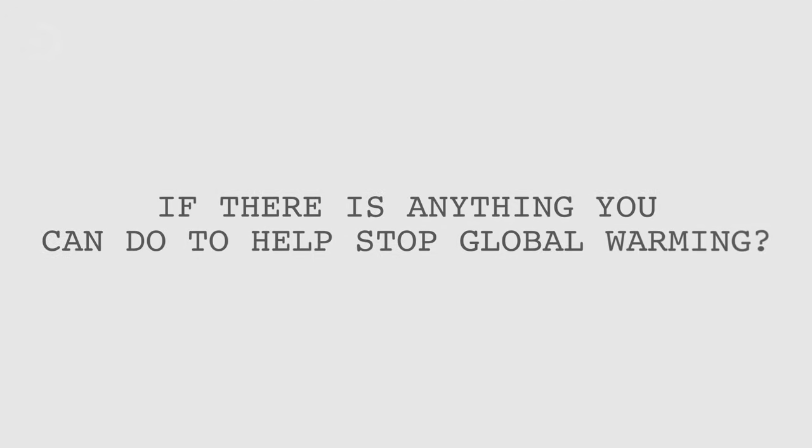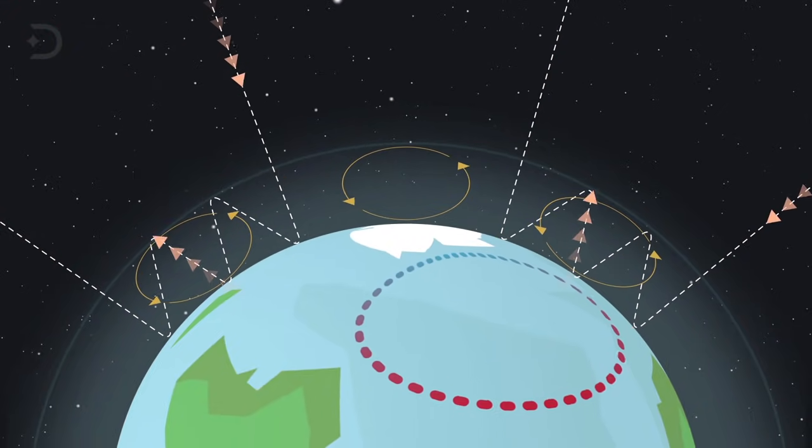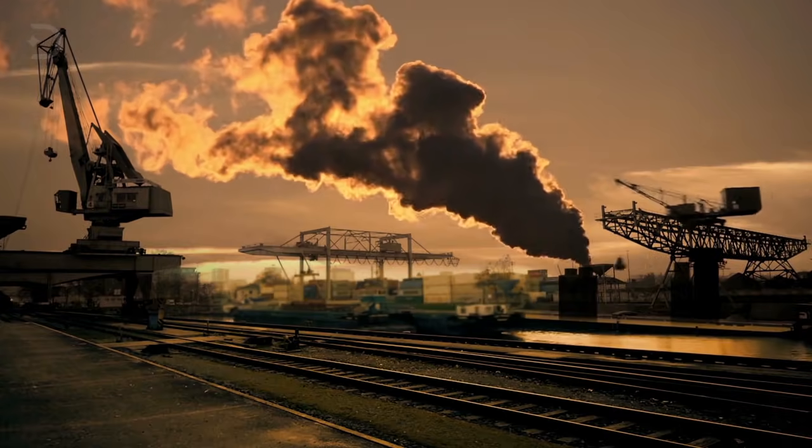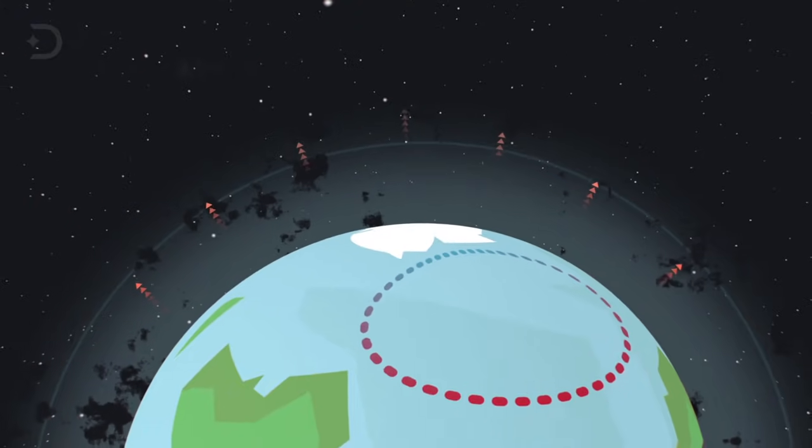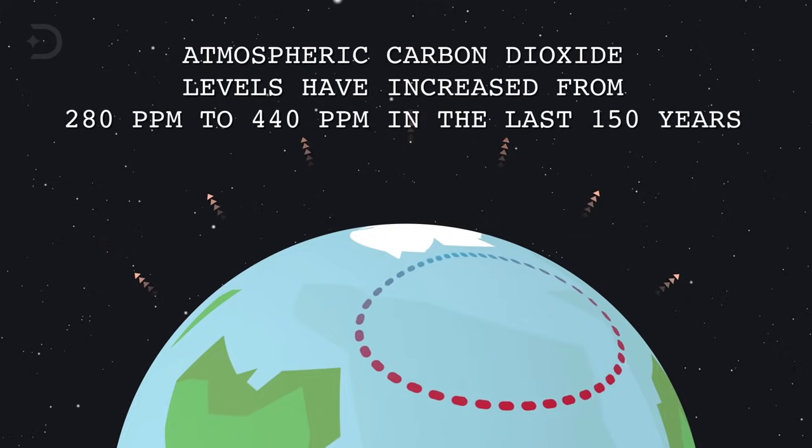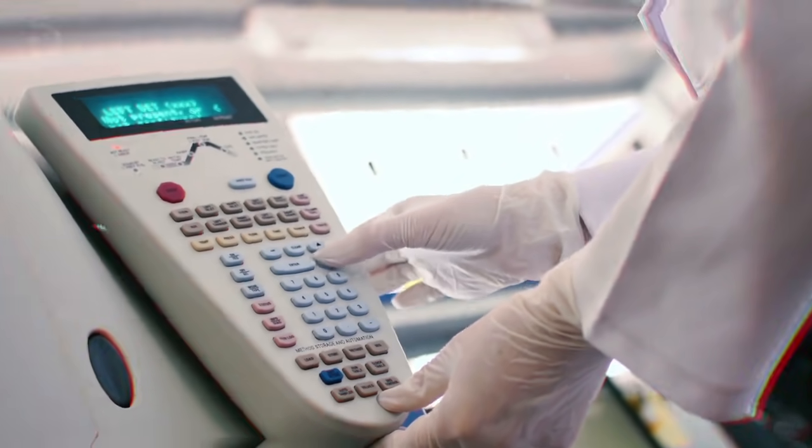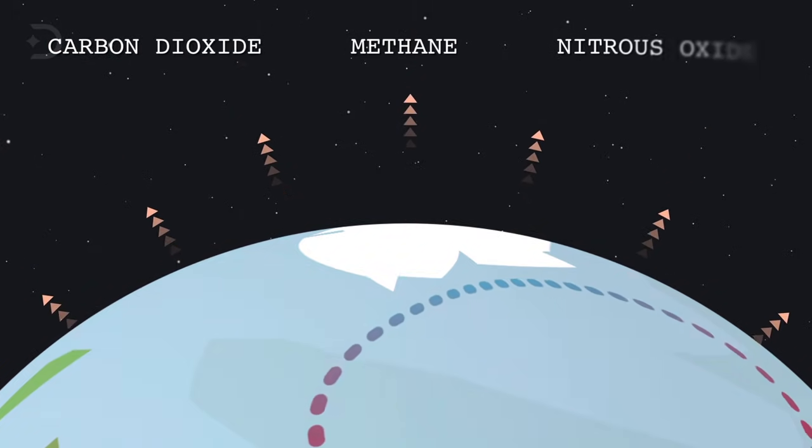You might be wondering if there's anything you can do to help stop global warming. Most climate scientists agree the main cause of the current global warming trend is human expansion of the greenhouse effect – warming that results when the atmosphere traps heat radiating from Earth towards space. The industrial activities that our modern civilization depends upon have raised atmospheric carbon dioxide levels from 280 parts per million to 400 parts per million in the last 150 years. The United Nations said that a scientific panel concluded that there is a 95% probability that human-produced greenhouse gases such as carbon dioxide, methane, and nitrous oxide have caused much of the observed increase in Earth's temperatures over the last 50 years.